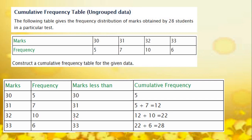To find the frequency of marks less than or equal to 32, we need to consider the 3 frequencies together. So it will be 5 plus 7 plus 10, which is 22. Then, marks less than 33 equals we need to add all the frequencies together. It will be 5 plus 7 plus 10 plus 6, which is 28. This is how we form a cumulative frequency table from ungrouped data.